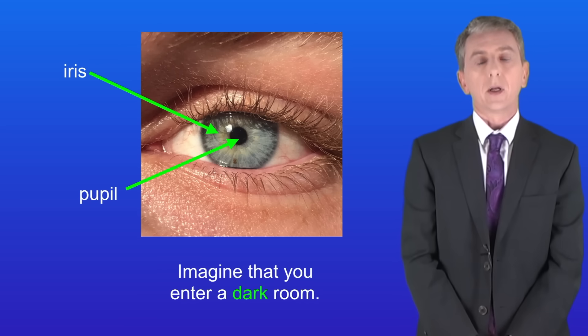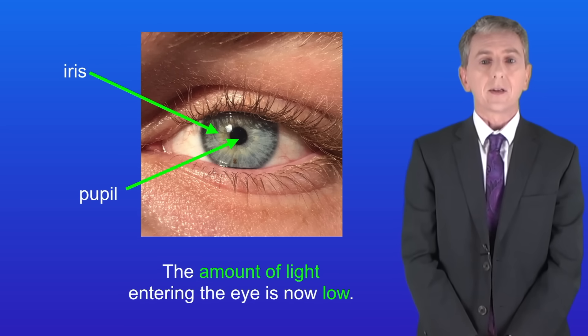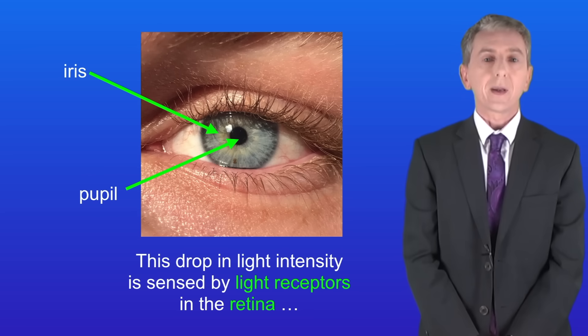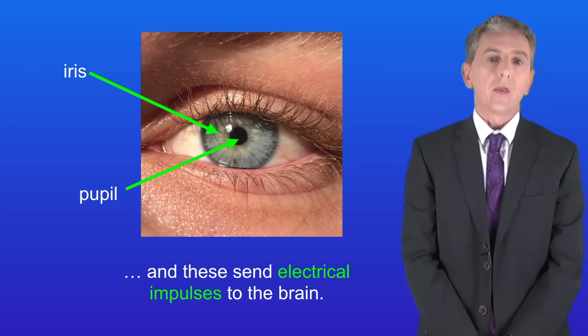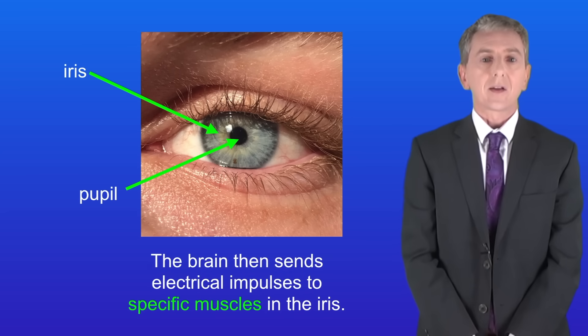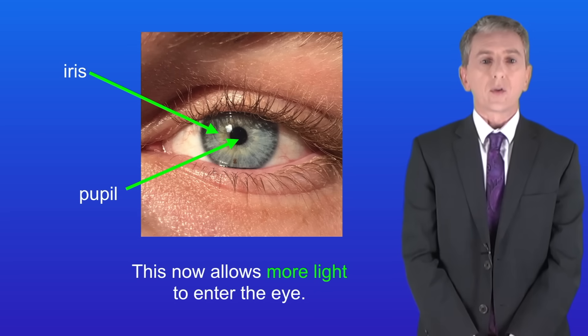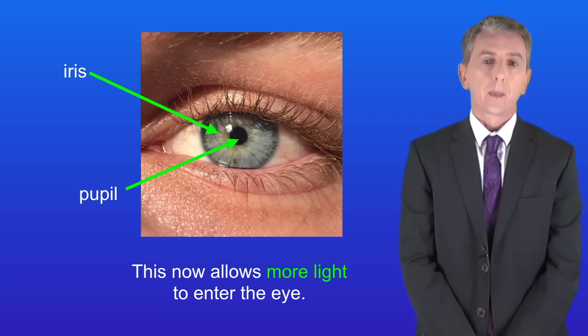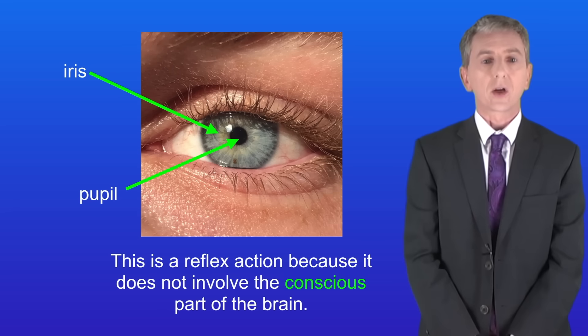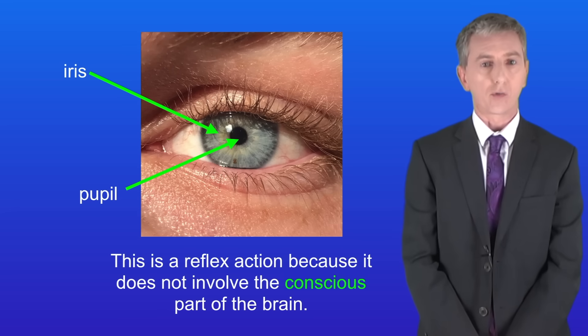Imagine that you enter a dark room. The amount of light entering the eye is now low. This drop in light intensity is sensed by light receptors in the retina and these send electrical impulses to the brain. The brain then sends electrical impulses to specific muscles in the iris. These muscles contract causing the pupil to become larger. This now allows more light to enter the eye. Now this is a reflex action because it does not involve the conscious part of the brain.